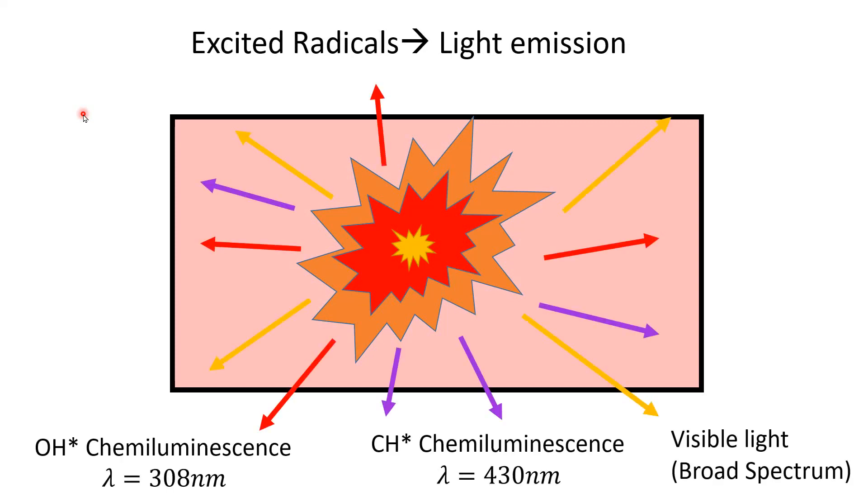In addition, we all know flames give off light, but flames also give off very specific types of light. It turns out that that hydroxyl radical is one of the very first things that is created as the fuel begins to decompose. And it emits light at a very specific wavelength, 308 nanometers. Hydrocarbon radicals are also produced pretty quickly upon ignition, and those give off a specific wavelength of light, 430 nanometers. And then also, there's a wide amount of light in the visible spectrum that we can see with our own eyes, or with any camera.